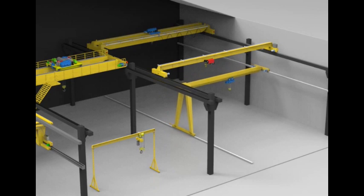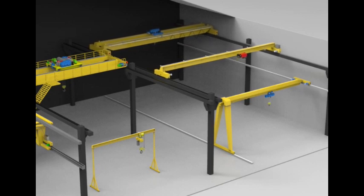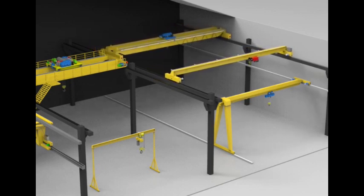Top Running Single Girder Bridge Cranes, 1 ton to 20 ton. Top Running Single Girder Bridge Cranes are similar to single girder overhead cranes, but with the advantage of being top-mounted on runway beams, providing more headroom.